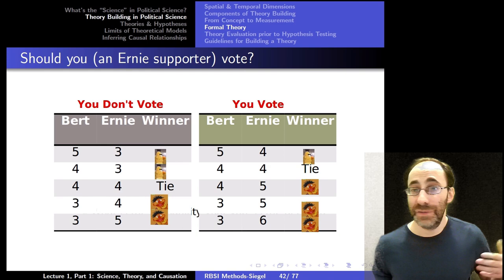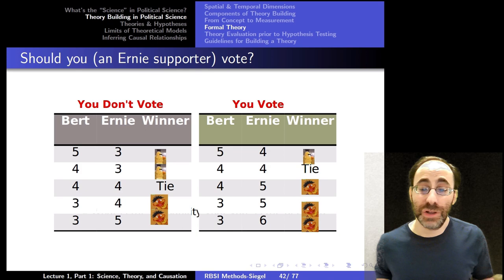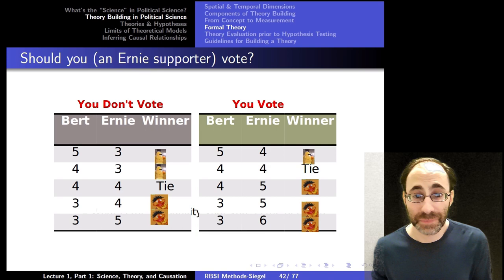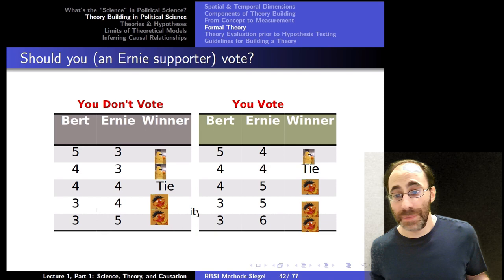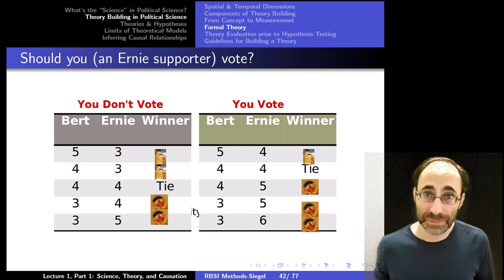In the second case, for three, Bert wins if you don't vote, but it's a tie if you do vote. Say the tie was settled by a coin flip. You've taken the vote from a loss to your preferences to a tie, to a half chance of getting what you want. That's an improvement. So now you have some concrete benefit to your voting in terms of the outcome of the election itself. In the third row, it was a tie, 4-4. But when you vote, you secure the win for Ernie. That's good. You went from having a half chance of getting what you wanted to definitely getting what you wanted.